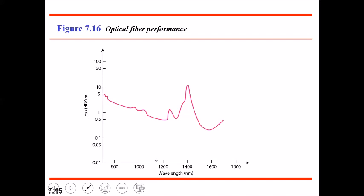In fiber optic cable, the attenuation is actually flatter than in the case of twisted pair cable or coaxial cable, and we need fewer repeaters when we use fiber optic cable.